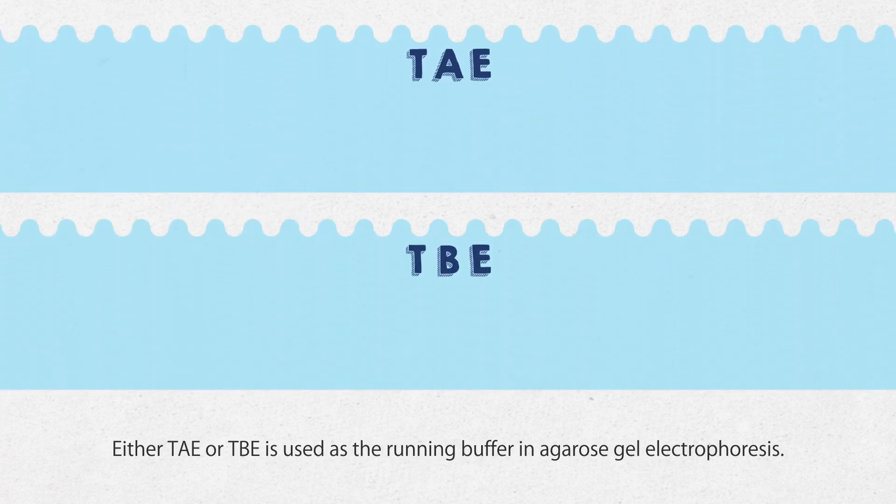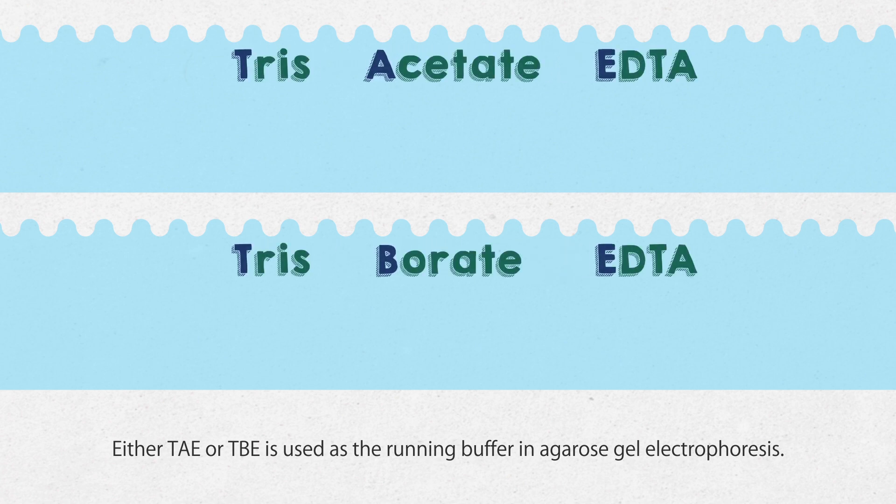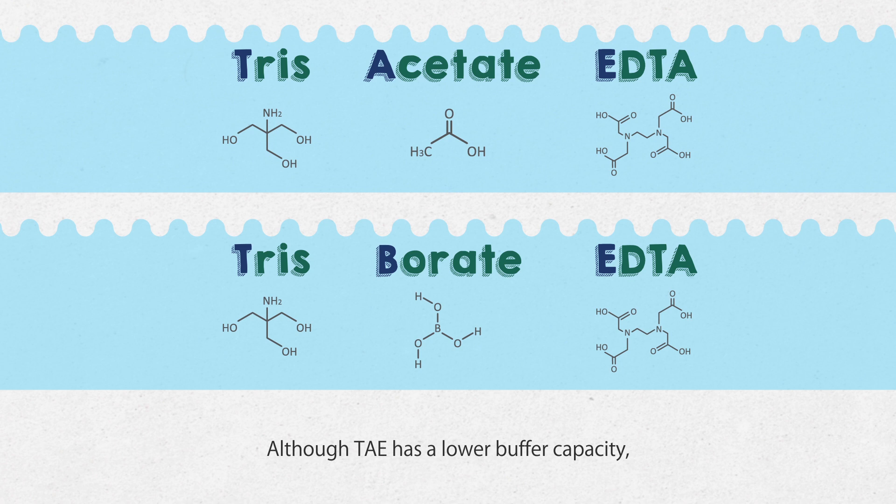Either TAE or TBE is used as the running buffer in agarose gel electrophoresis. Although TAE has a lower buffer capacity, linear double-stranded DNA runs faster in TAE.